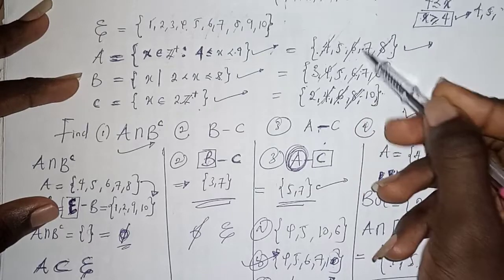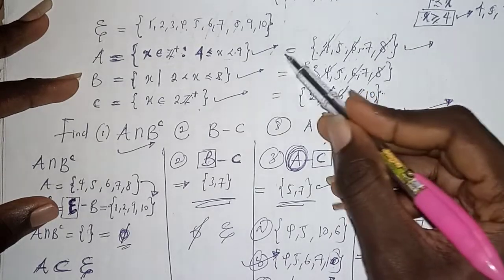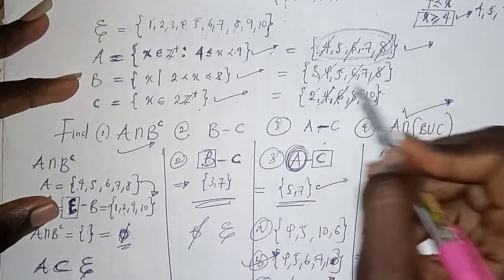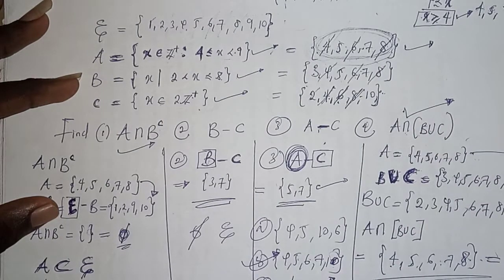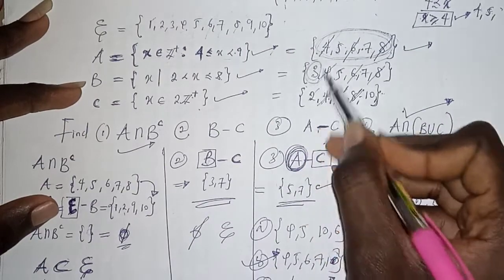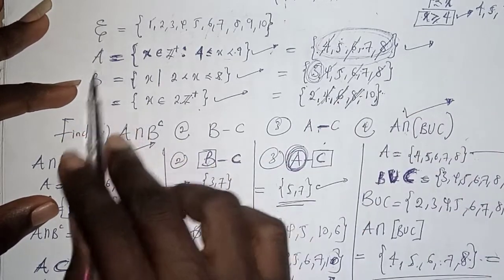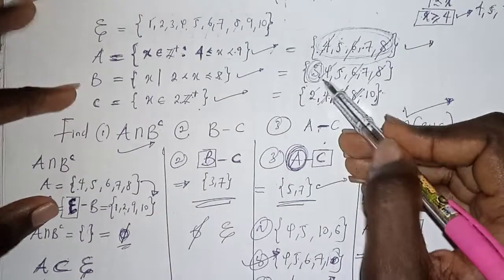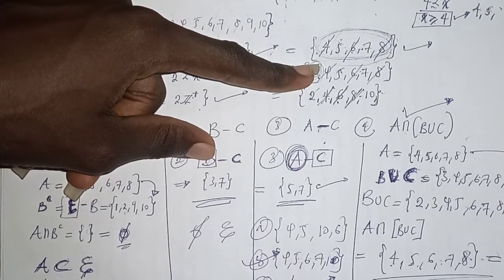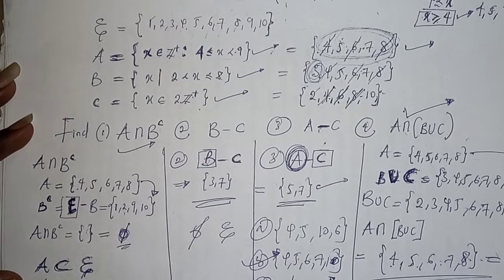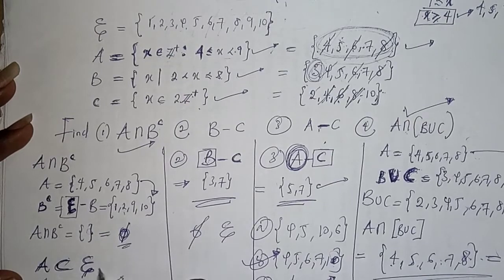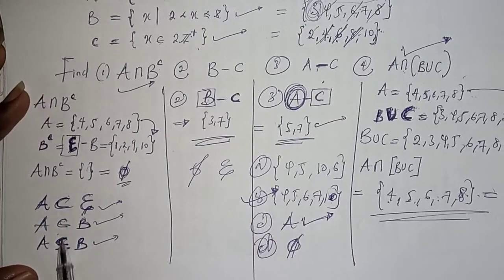A is also a proper subset of B because all elements of A — four, five, six, seven, eight — are inside B, and there exists at least one element in B, which is three, that is not in A. But if A and B had exactly the same elements like {4,5,6,7,8} and {4,5,6,7,8}, then A would be a subset and also equal to B — that is equality of sets. That is the main explanation. Thank you.